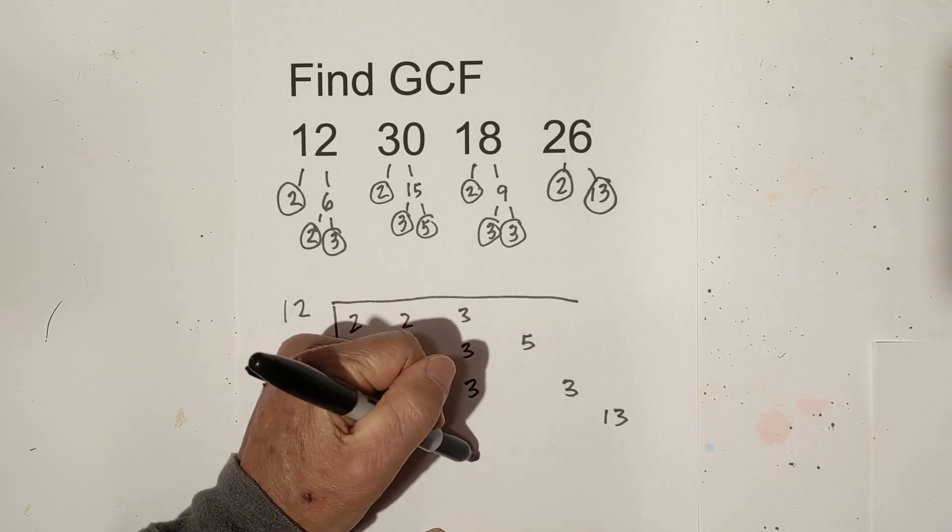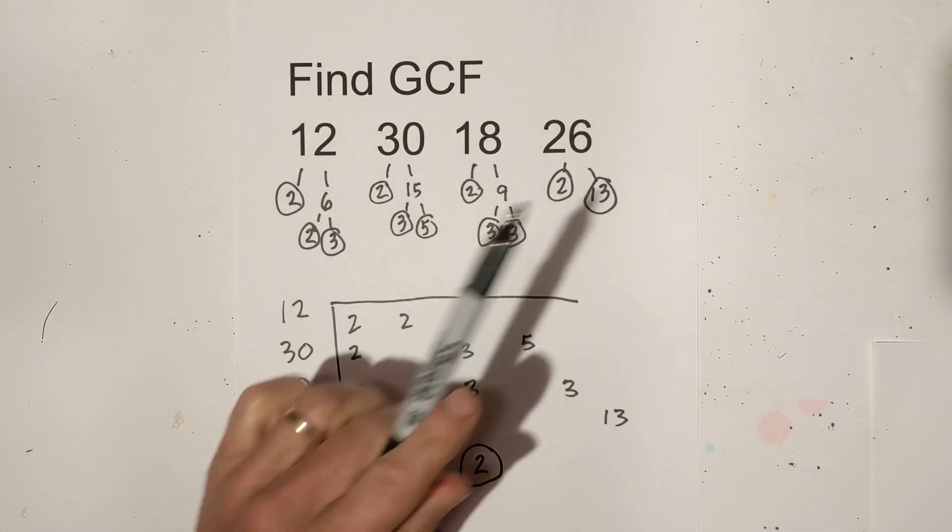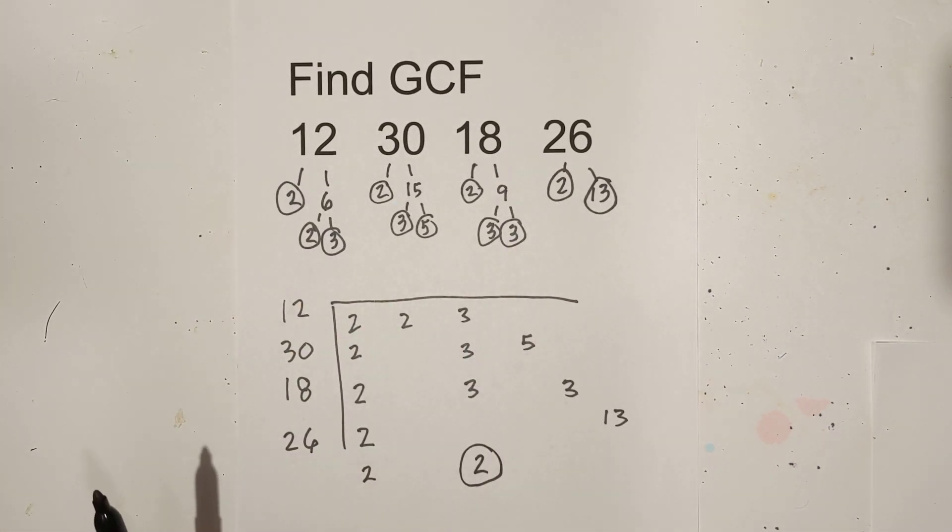So the greatest common factor is 2 for 12, 30, 18, and 26. I hope that was helpful. And remember kindness multiplies kindness. Be kind to someone today.